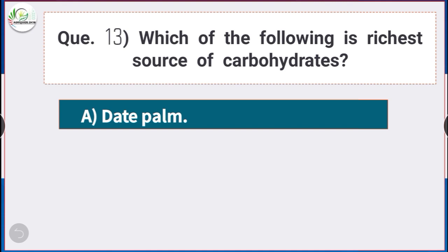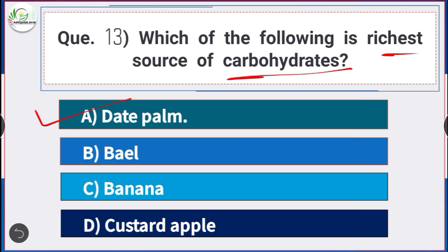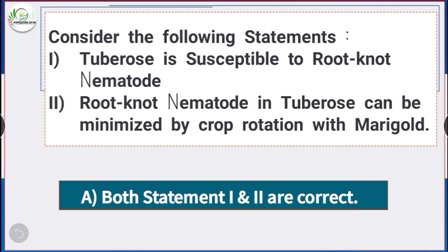Question number 13: Which of the following is the richest source of carbohydrate? Answer is option A — date palm. Date palm is the richest source of carbohydrate.